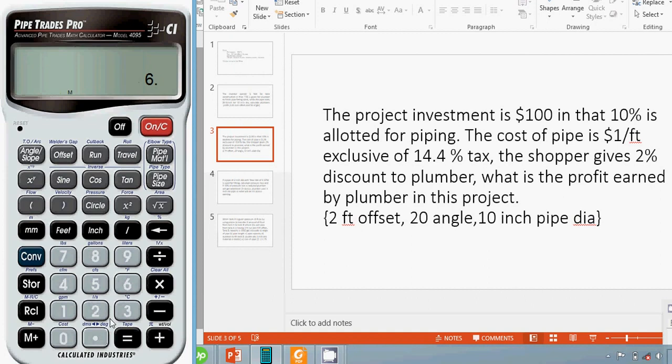So $6.33 times 14.4%, that is $0.91152. We add this with $6.33 to get the total cost.